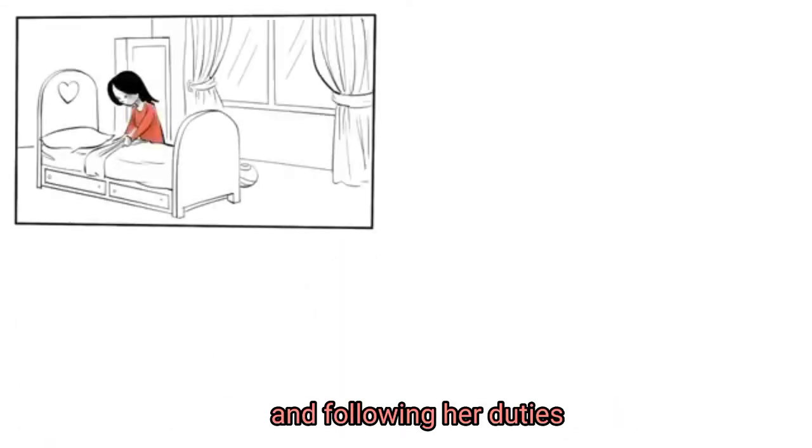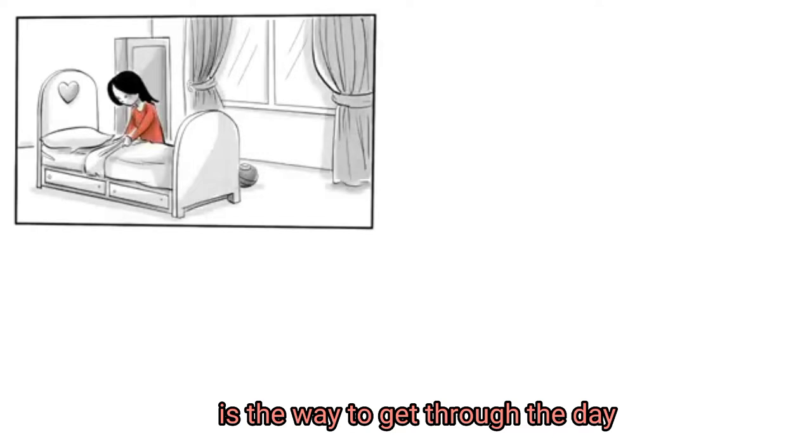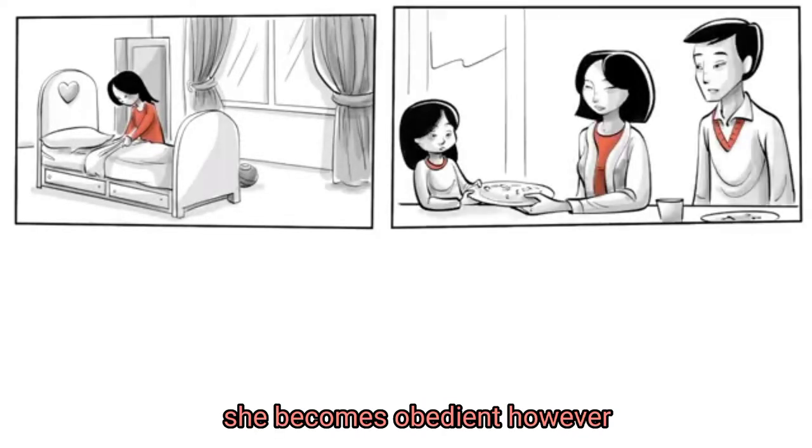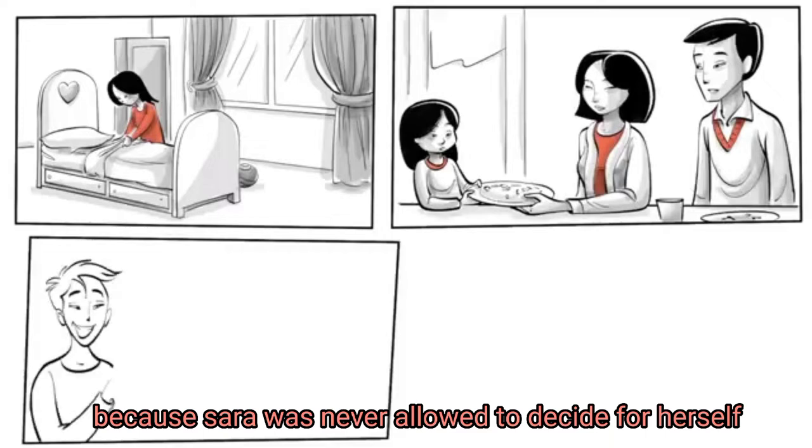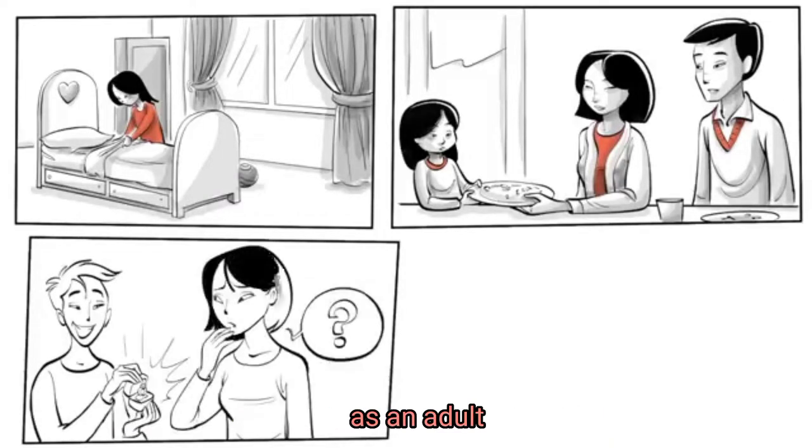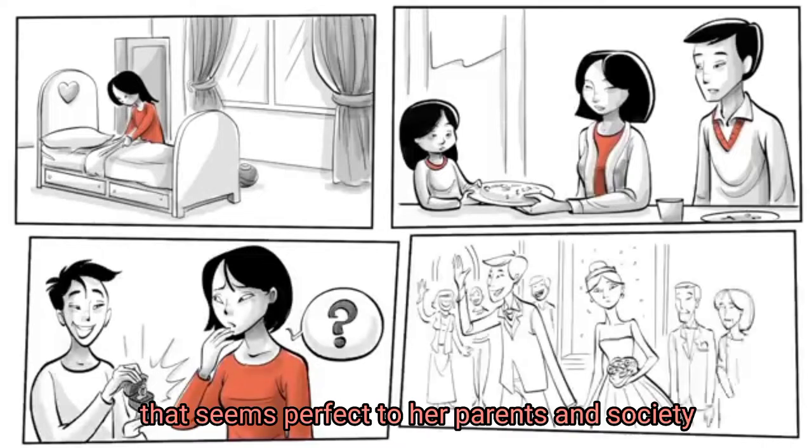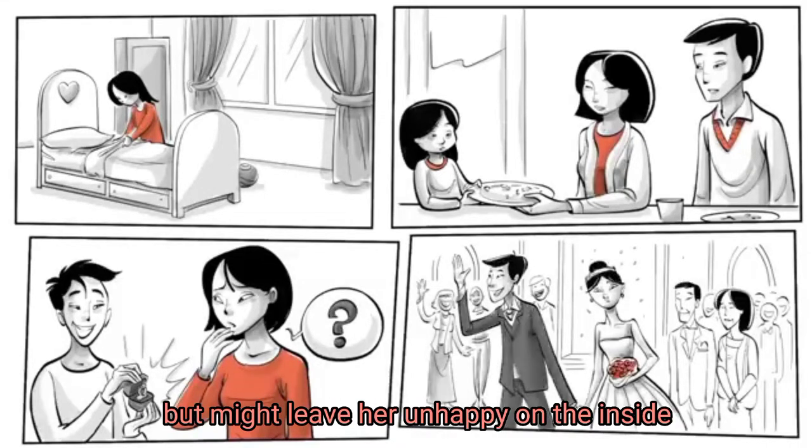Sarah learns that suppressing her emotions and following her duties is the way to get through the day. To get the love of her parents and to avoid making them upset, she becomes obedient. However, because Sarah was never allowed to decide for herself or follow her intrinsic interests, as an adult, she doesn't know what she really wants. She begins living a life that seems perfect to her parents and society, but might leave her unhappy on the inside.